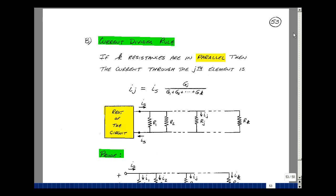Let me start by stating the current divider rule. If k resistances are in parallel, then the current through the jth element is equal to this current times this conductance over the sum of the conductances.